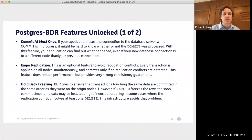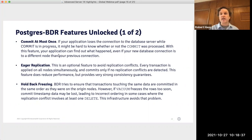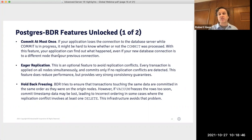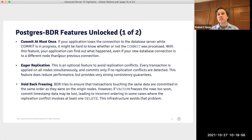The second feature is called Eager Replication. This is an optional feature to avoid replication conflicts. When enabled, every transaction is applied on all nodes simultaneously, and the source transaction only commits if no replication conflicts are detected. Using this feature does reduce performance, but it provides extremely strong consistency guarantees and may be well-adapted to situations with very high-value transactions where you need absolute certainty that they happen consistently on every node in your cluster.